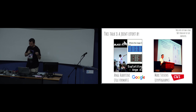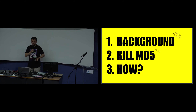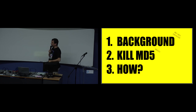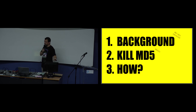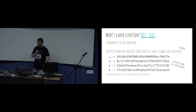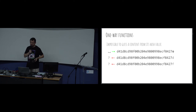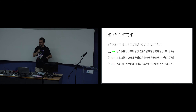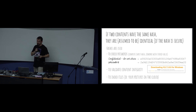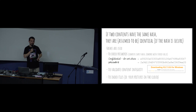Some background on hash functions and hash collisions, then why we try to kill MD5 and how, and a high-level introduction to how we made it work. A hash function like MD5 or SHA-1, commonly called a checksum, returns from any content a big fixed-size value. From any tiny change the hash value is completely different, which means if the hash value is identical the contents are assumed to be the same.